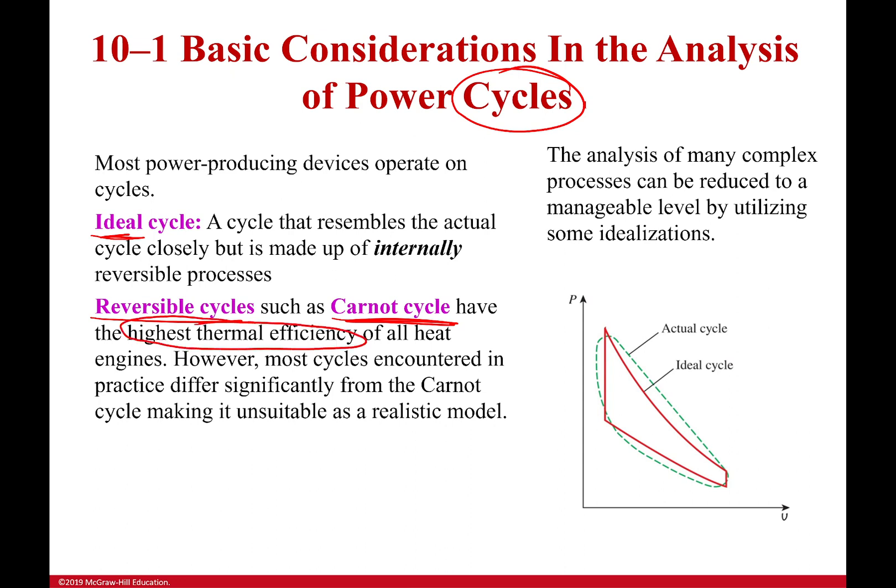If they're the highest, what that means is that when we're looking at this ideal cycle right here, whatever we do is going to be less efficient than that. The power output from this ideal cycle is going to be more than the power output from our actual cycle. Efficiency of our ideal cycle is going to be more than the efficiency of our actual cycle. And so what this does is it gives us an upper limit. This is ideal.